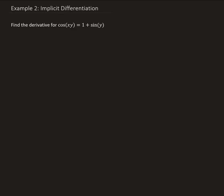In this example, we want to find the derivative for cosine of xy, where y equals 1 plus sine y. So let's first write this in implicit form. We're going to have cosine of xy minus sine y equals to 1.